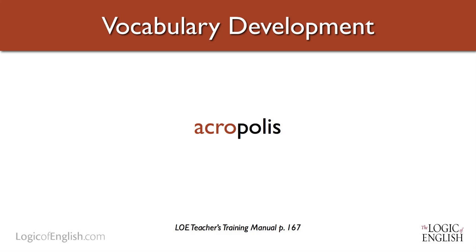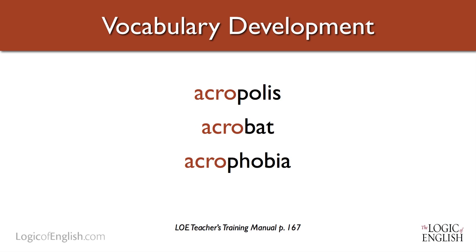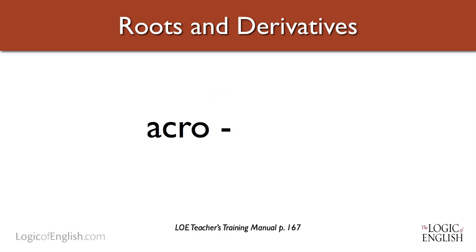In the history classroom, we have the Acropolis. Can you think of any words that use the root 'acro'? There's acrobat and acrophobia. 'Acro' means height, so the Acropolis was on a high hill — and that's why it was named that.